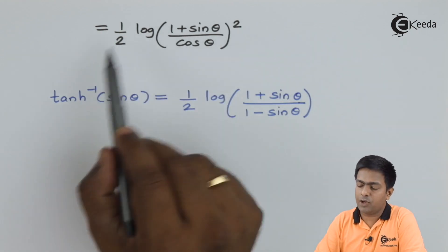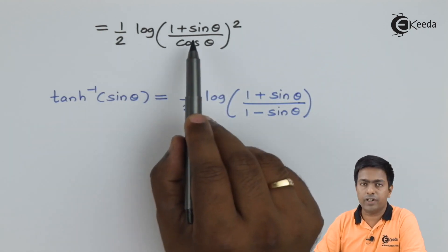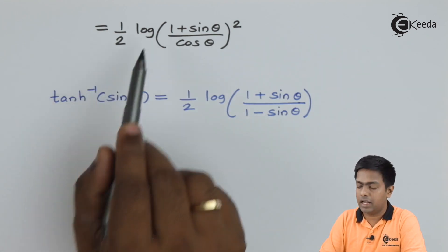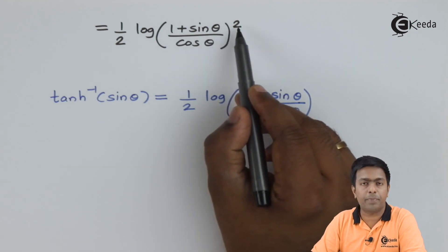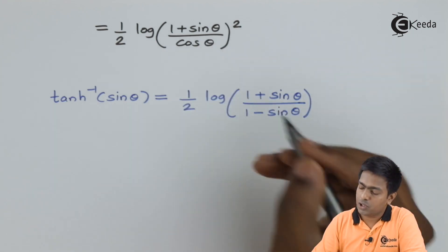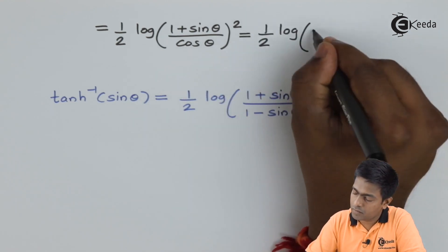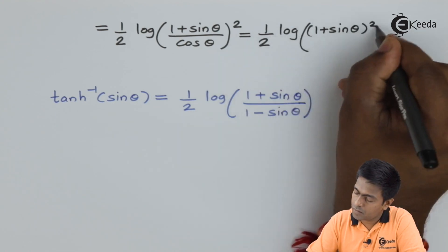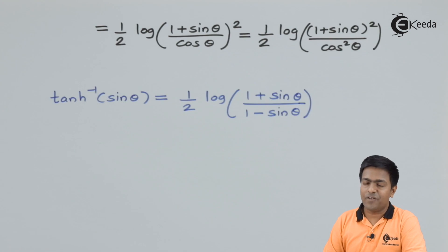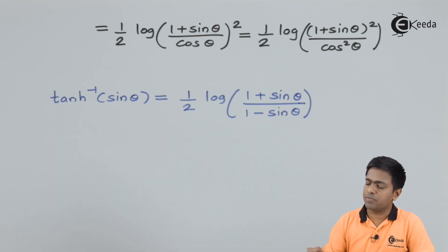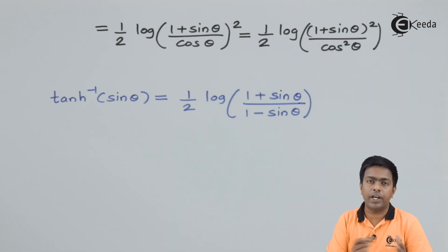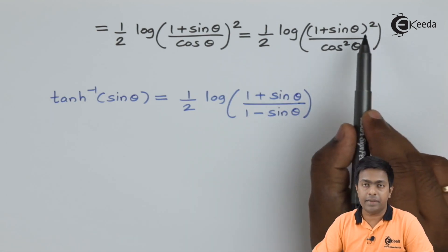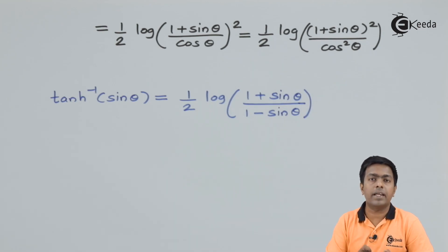This is the value of the right hand side. We have ½ and the log, but the bracket contents still don't match the left hand side. To fix that, I'll take the square separately into the numerator and denominator. Then I'll substitute cos²θ = 1 − sin²θ in the denominator, since I want to convert the cos term into a sin term to get (1 − sin θ).